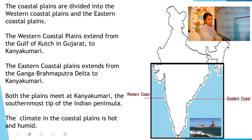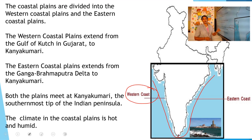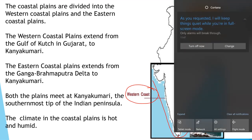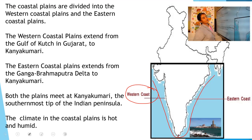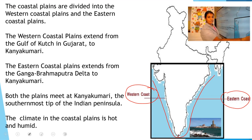Can you see this picture? These are the coastal plains of India. This is the western side of India, so this coastal plain is known as western coastal plain. In India, the coastal plains are divided into two: western coastal plains and eastern coastal plains. This is eastern coastal plains because this is the eastern side of India.